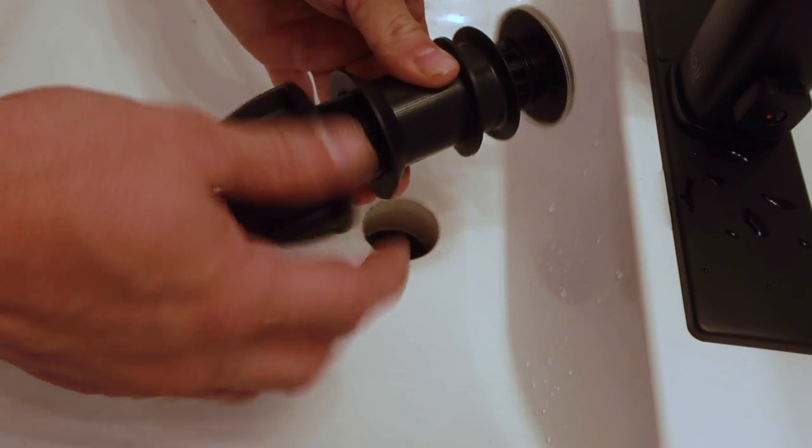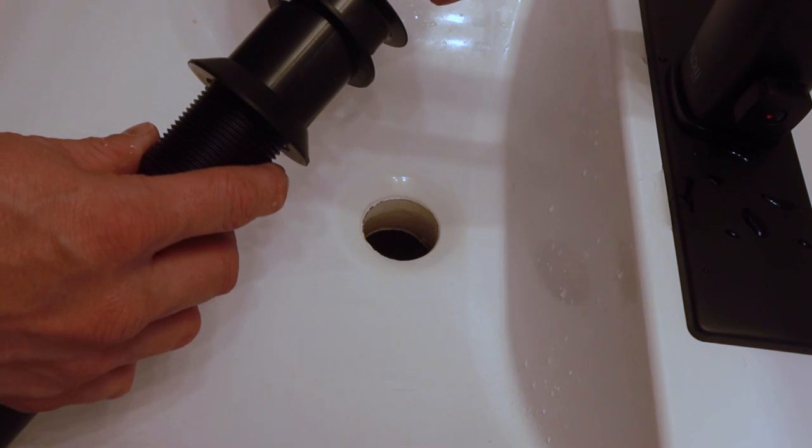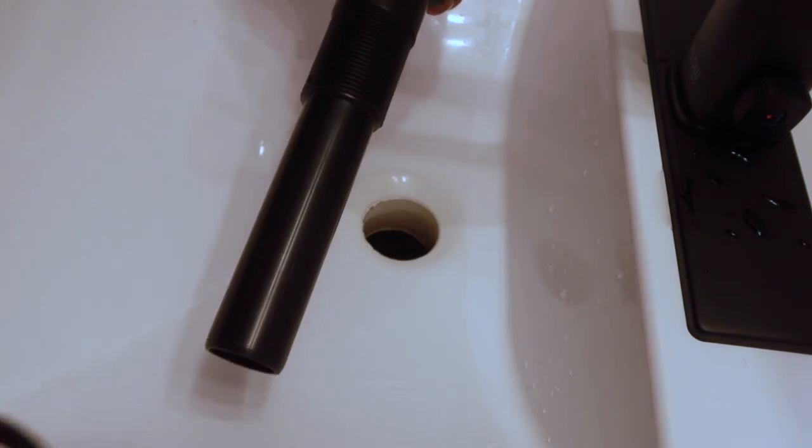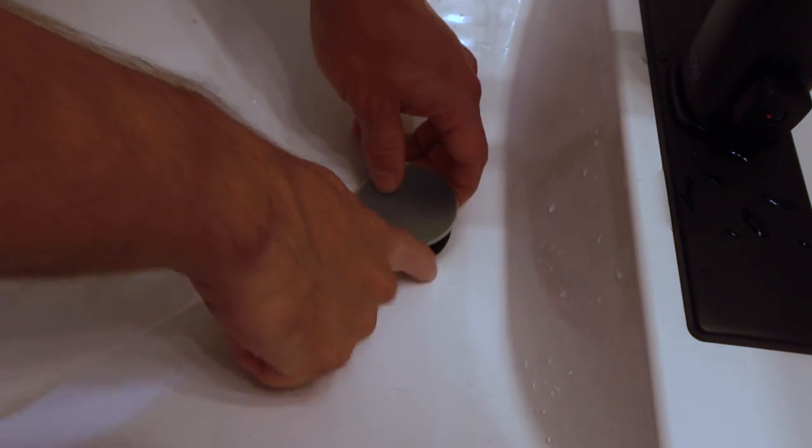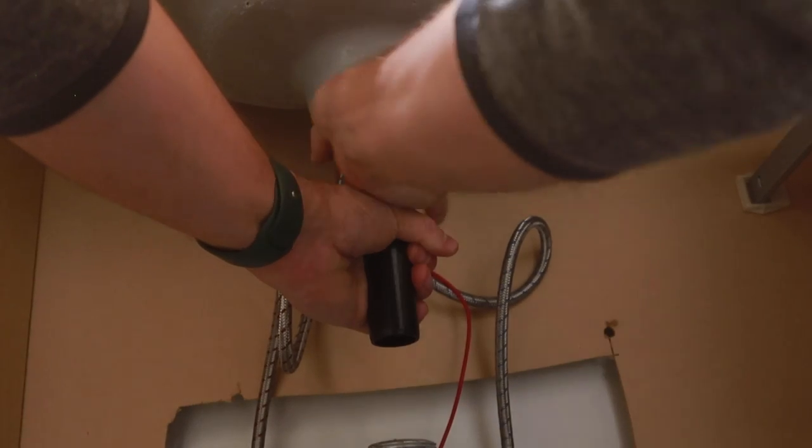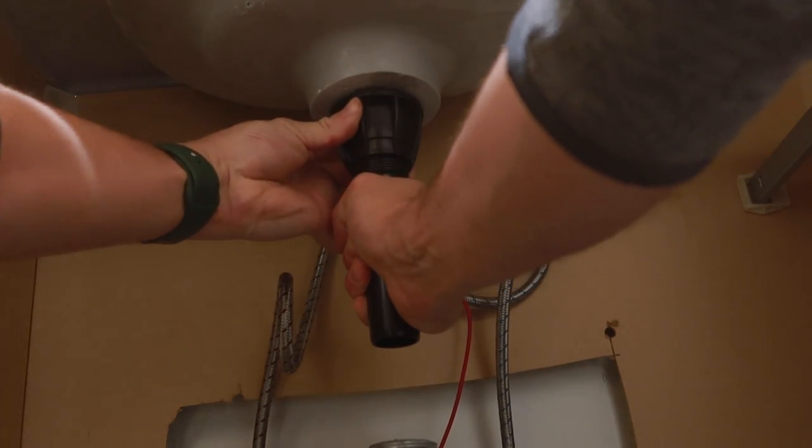Next, disassemble the drain assembly by removing the lock nut and the rubber washers. Most drain assemblies these days have moved away from plumber's putty and have replaced them with these rubber washers and this one is no different. So I can just drop the upper assembly down into the hole and reinstall the rubber washers underneath and finally tighten down the lock nut over top.